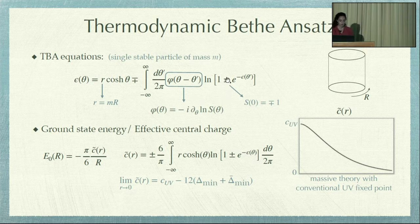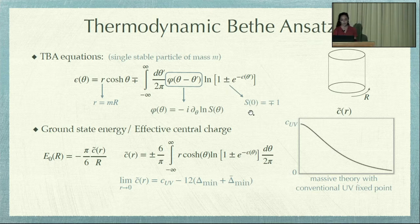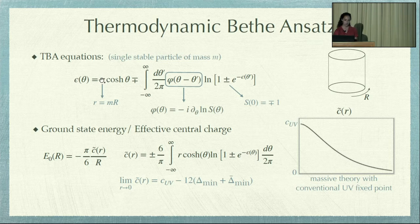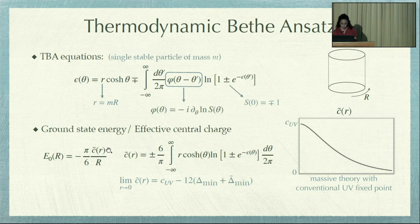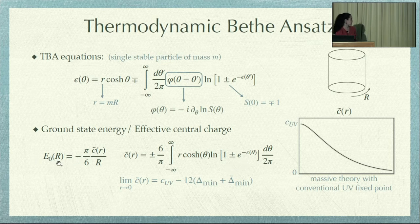I'm also writing two possible signs depending on the type of S-matrix we have: if theta equals zero it's minus one, it's fermionic, and plus one, it's bosonic. We also have a dimensionless parameter R given by the radius and the mass of the stable particle. Once you have these pseudo-energies, you can compute the effective central charge, which is related to the ground state energy.